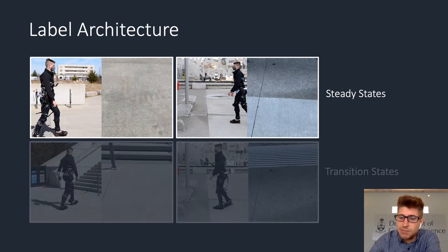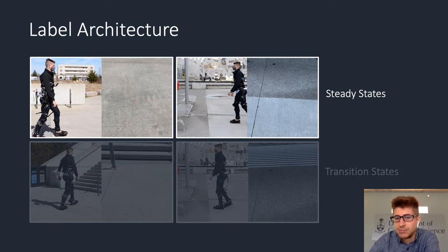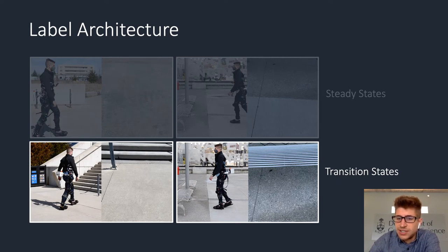The images in the top row show me walking with a robotic exoskeleton while wearing our computer vision system. These are examples of steady states where the visual field of view shows only continuous level ground terrain — essentially what the exoskeleton sees. In contrast, the images in the bottom row are examples of transition states, where the visual field of view shows a transition from level ground terrain to either incline stairs on the left, or a bench on the right.